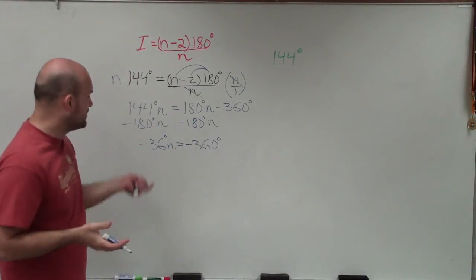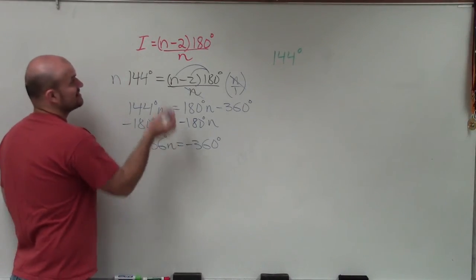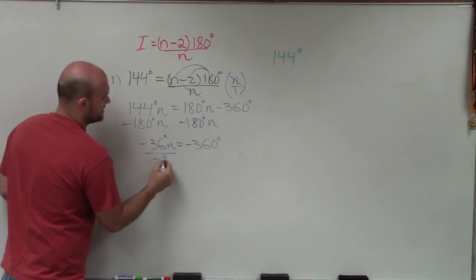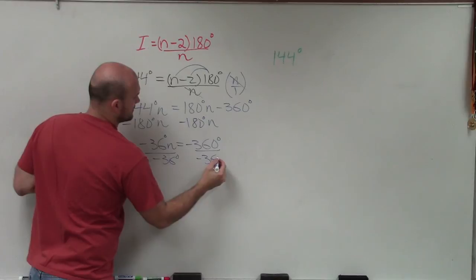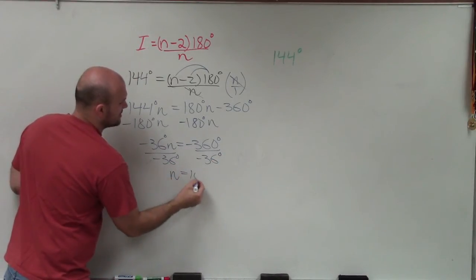Remember, by dividing to get our n, that's going to tell us the number of sides. So I divide by negative 36, and therefore I get n equals 10.